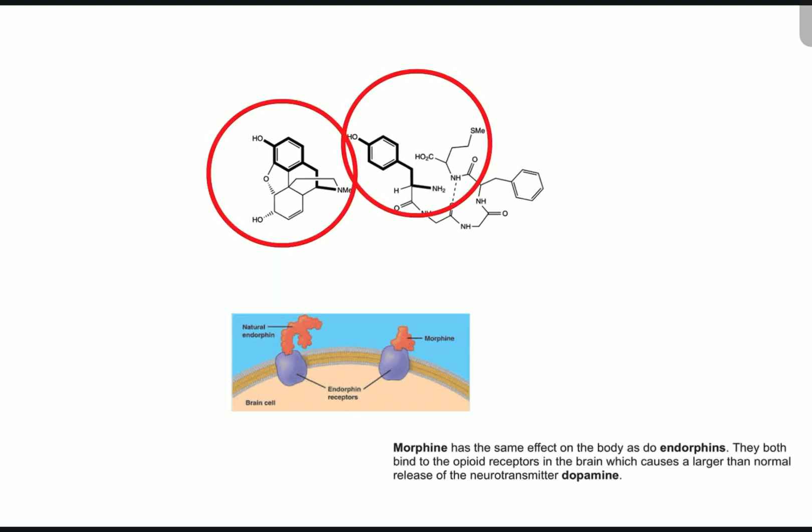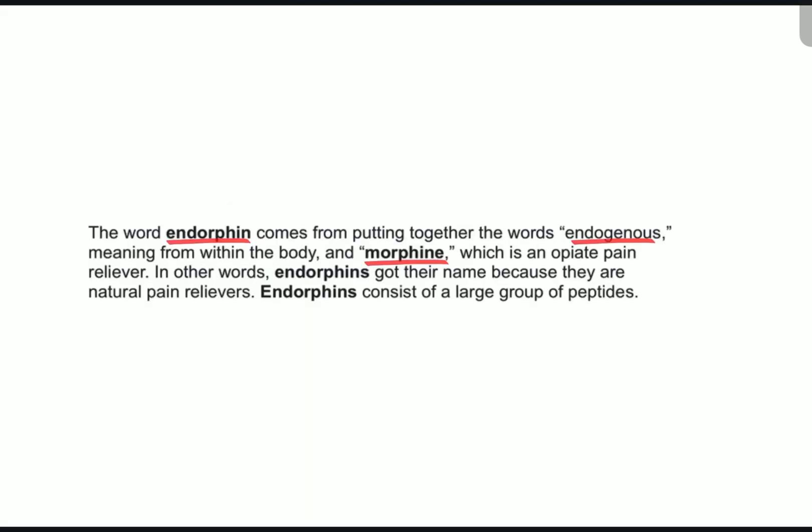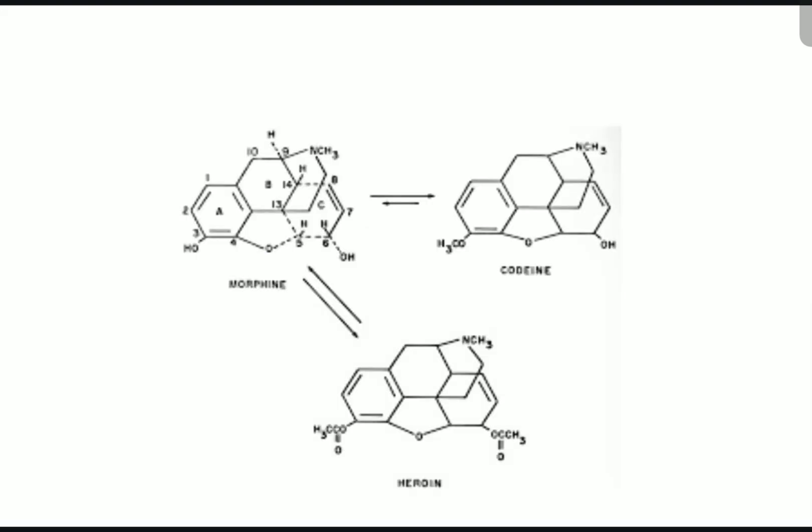Morphine essentially has the same effect on the body as endorphins do. If we look at endorphin's definition, it is a combination of endogenous and morphine. Endogenous means within our body, and morphine means an opiate pain reliever. When we take heroin and it reaches our brain, it is metabolized into morphine, which then binds to endorphin receptors.